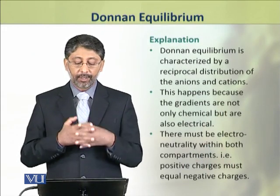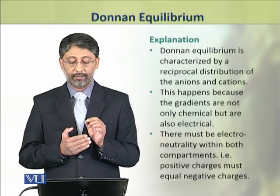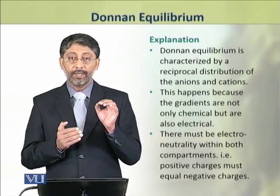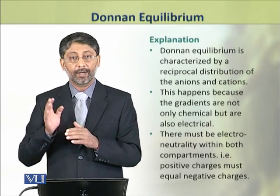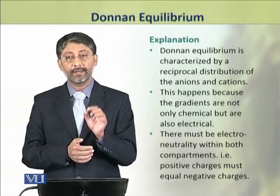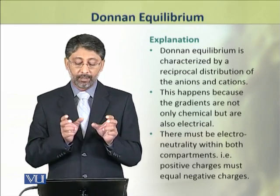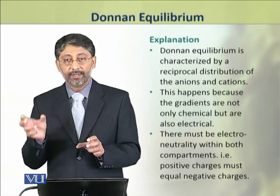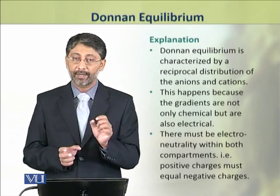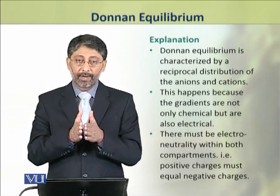We can explain Donnan equilibrium on the basis of distribution of anions and cations. This unequal distribution happens because we consider not only chemical concentration gradients but also electrical gradients. Since we are dealing with ions — which are charged — both chemical and electrical gradients govern their movement.